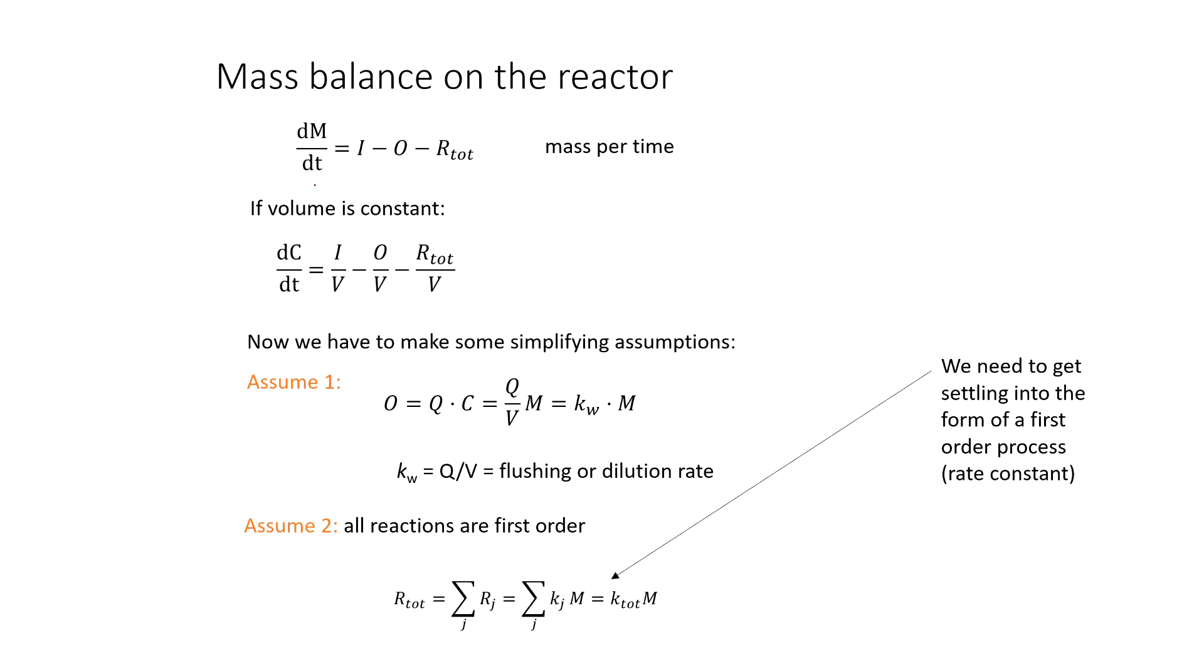So hopefully you guys have seen this before. dm/dt is the change in mass over the change in time, and it's equal to the inputs minus the outputs minus any reactions, the amount of mass being removed due to reactions. And if the volume is constant, you can divide this whole thing through by V to get dc/dt instead of dm/dt. And all of this math depends on the idea that your rate constants, k_j and k_total, are going to be first-order processes. And the units of a first-order rate constant are one over time.